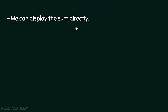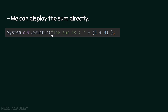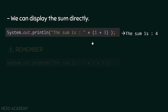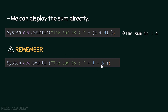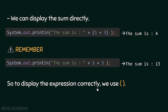Also, we can display the sum directly. We are printing this string concatenated to 1 plus 3 inside parentheses. The parentheses are important here. If we don't use parentheses, this plus sign will be considered as a concatenation operator — and we saw this before. So after this statement is executed, we will see the sum is 4. Remember, if we don't use parentheses, it will be a concatenation operator, so we will see 'the sum is 13'. To display the expression correctly, we use parentheses.